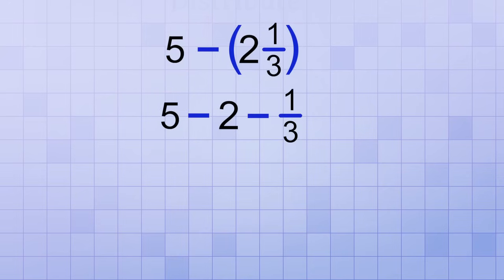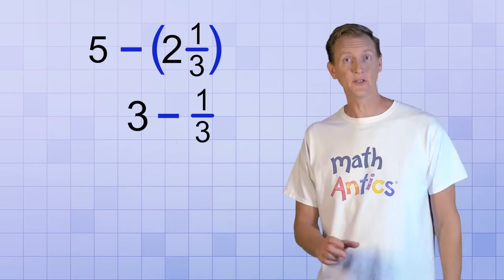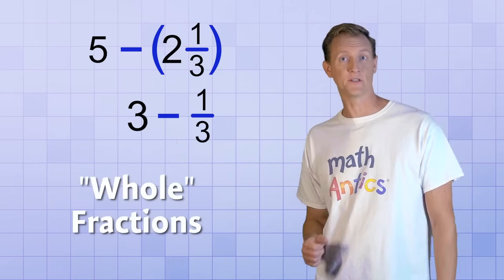Now that we have the problem written correctly, we'll get the right answer if we do these math operations. Going from left to right, we have 5 minus 2, which is 3, but then for the last step we need to subtract 1 third from 3. That might seem hard to do, unless you remember what we learned about whole fractions in the last video.